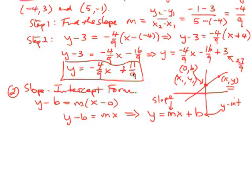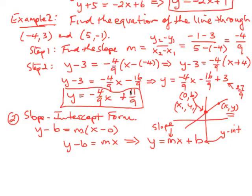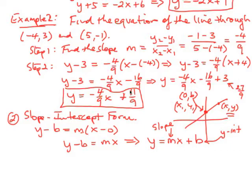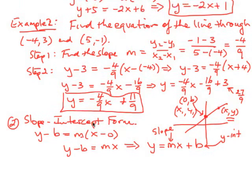This is a very useful form. Looking back at our earlier example, we had negative 4/9 as the slope — that's the coefficient in front of x — and 11/9 is the y-intercept. Similarly, in the first example, negative 2 is the slope and positive 1 is where the line crosses the y-axis. This is what's called the slope-intercept form.